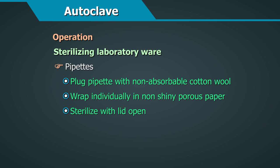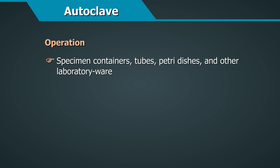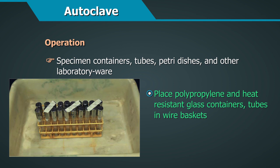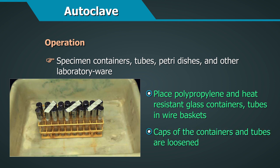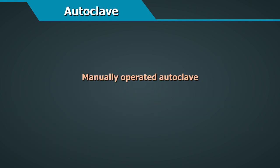For pipettes, plug glass or polypropylene pipettes with non-absorbent cotton wool and wrap individually in non-shiny porous paper, such as X-ray wrapping paper, or place in a metal or polypropylene canister, leaving the top off during autoclaving. For specimen containers, tubes, petri dishes, and other laboratory wear, place polypropylene and heat-resistant glass containers and items in wire baskets or suitable open-sided holders, ensuring caps are loosened when loading.